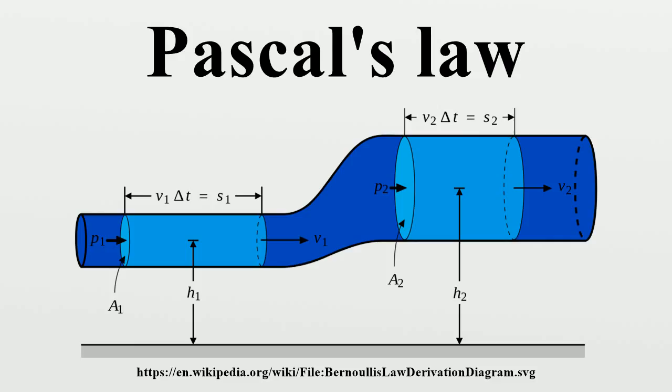When the small piston is moved downward 10 cm, the large piston will be raised only 1/50th of this, or 0.2 cm. The input force multiplied by the distance moved by the smaller piston is equal to the output force multiplied by the distance moved by the larger piston. This is one more example of a simple machine operating on the same principle as a mechanical lever.